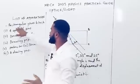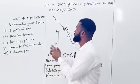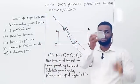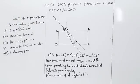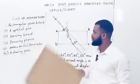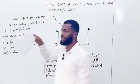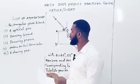The apparatus they gave us is a rectangular glass block — this is the rectangular glass block, and this is its diagram. We also need four optical pins, just pins, a drawing board, and papers. These are the papers — just A4 drawing paper. You can use any paper, you can improvise, that is very fine.